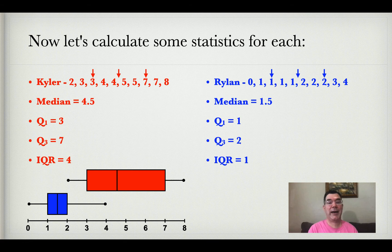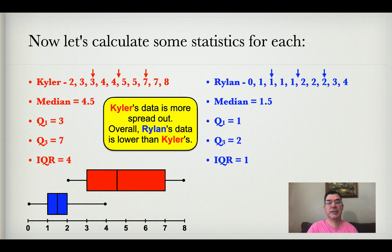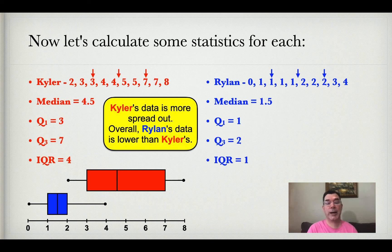Now I have box and whisker plots for both sons on the same x-axis, so I can do some comparison. Here's an example: Kyler's data is more spread out.